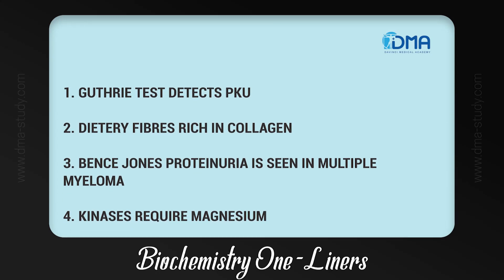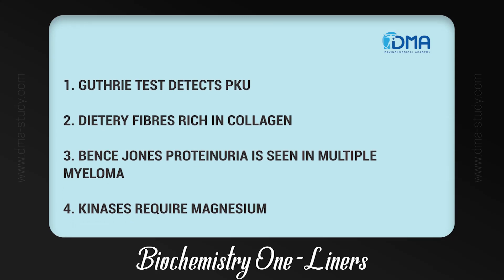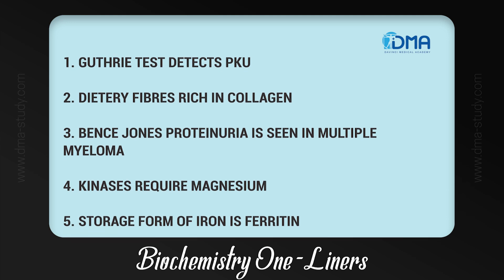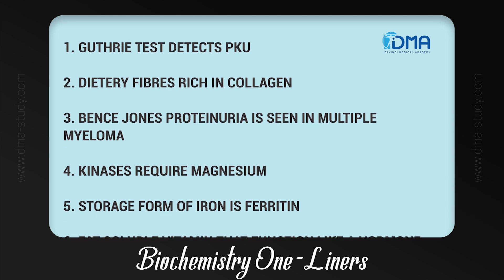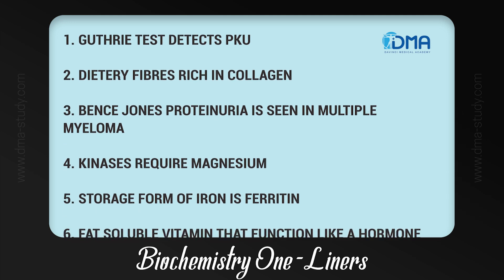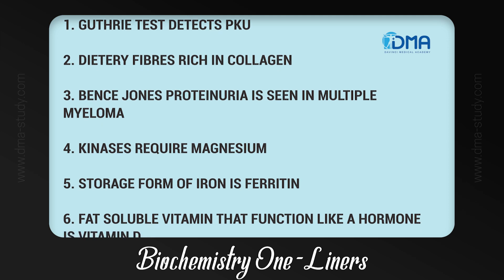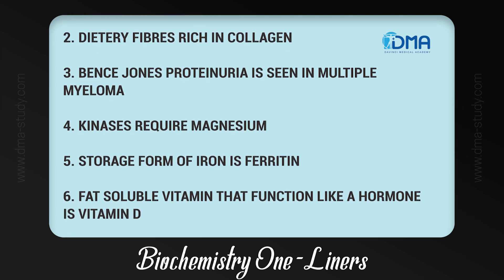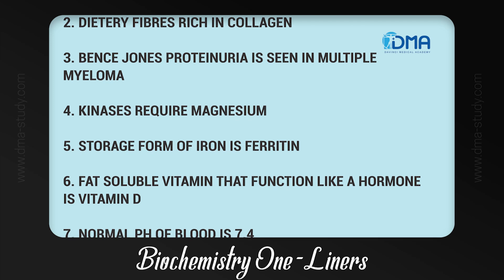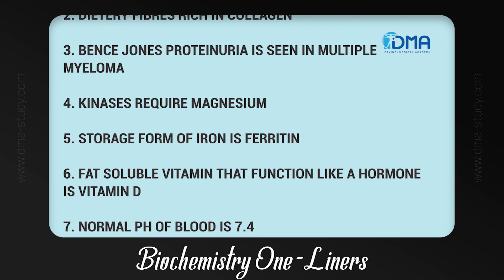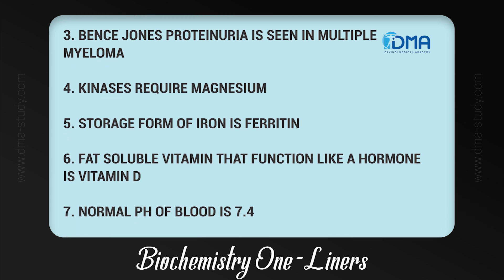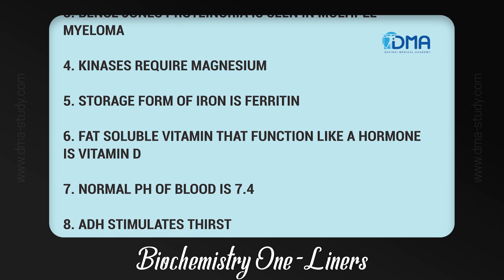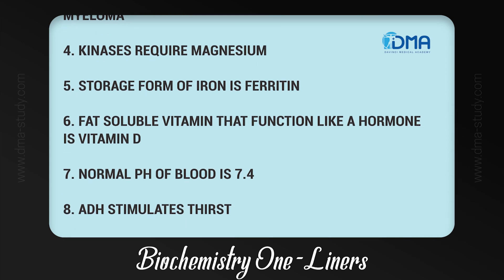1. Guthrie test detects PKU. 2. Dietary fibers rich in collagen. 3. Bence-Jones proteinuria is seen in multiple myeloma. 4. Kinases require magnesium. 5. Storage form of iron is ferritin. 6. Fat-soluble vitamin that functions like a hormone is vitamin D.